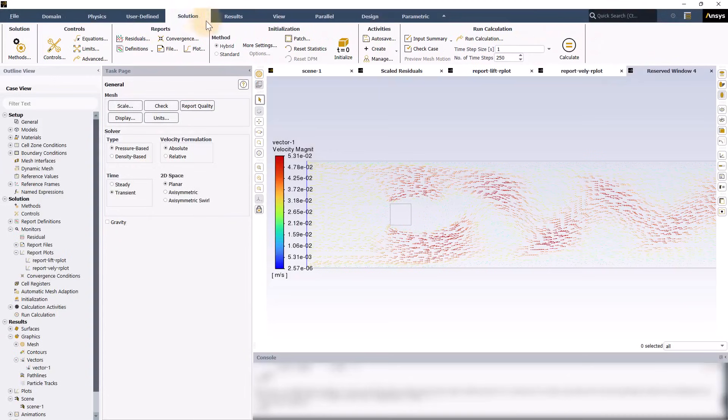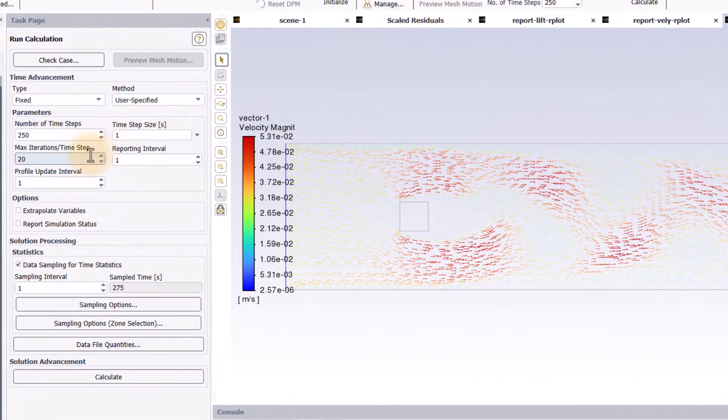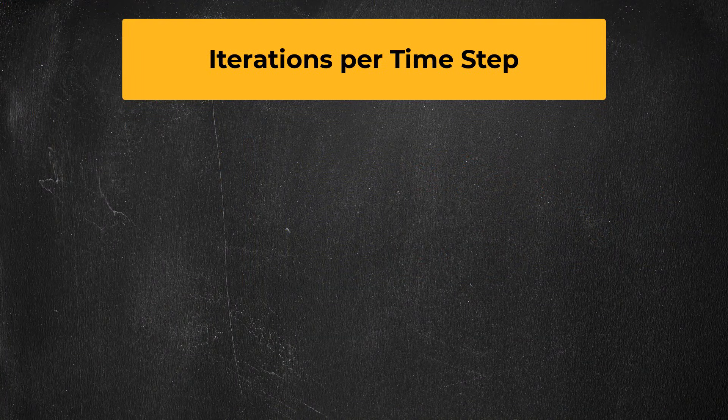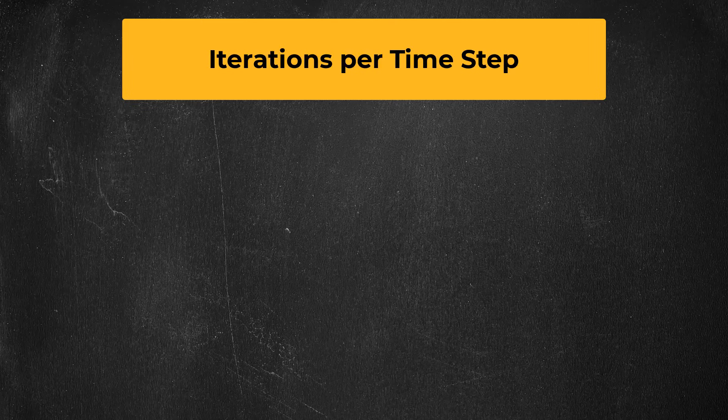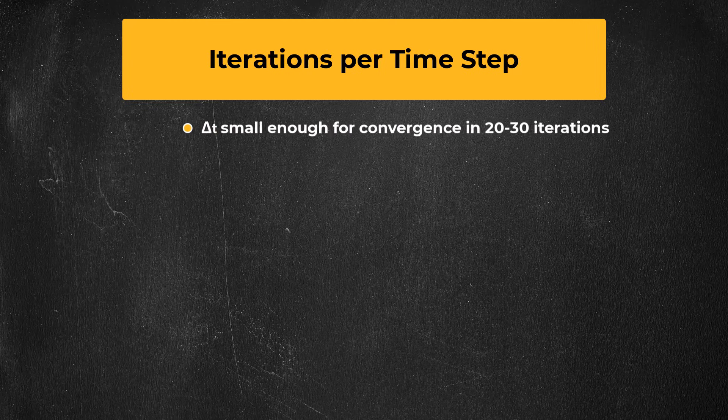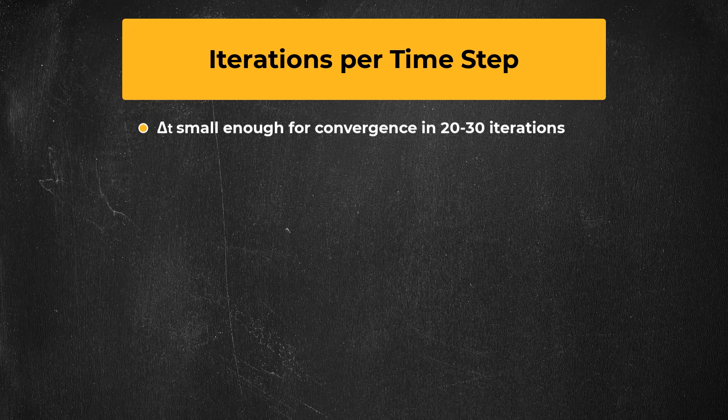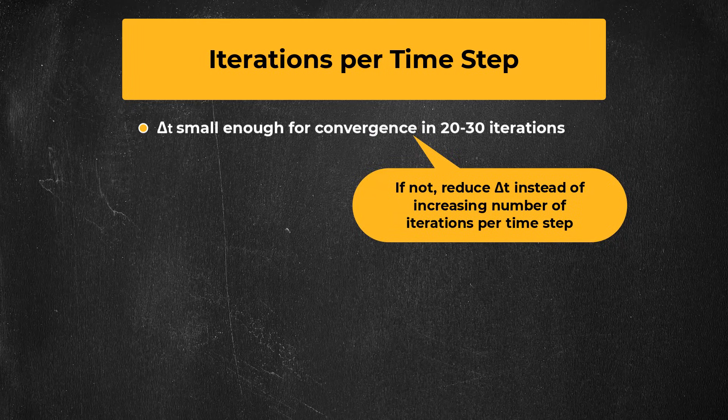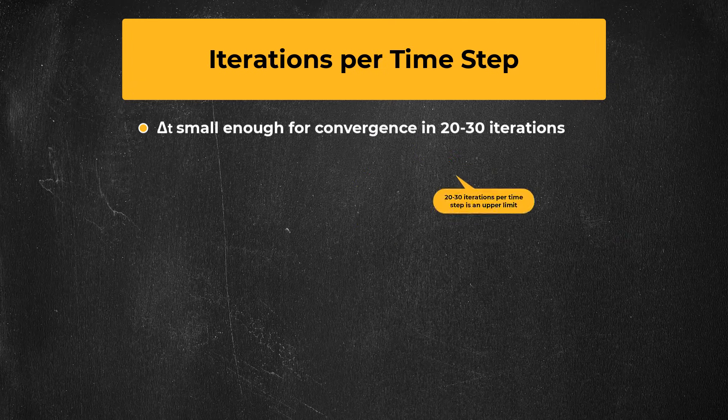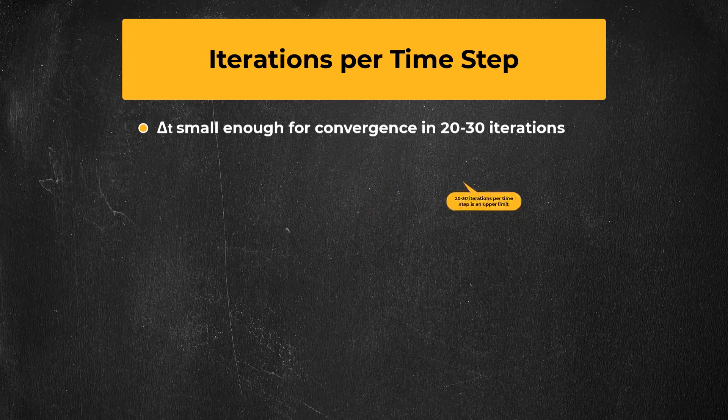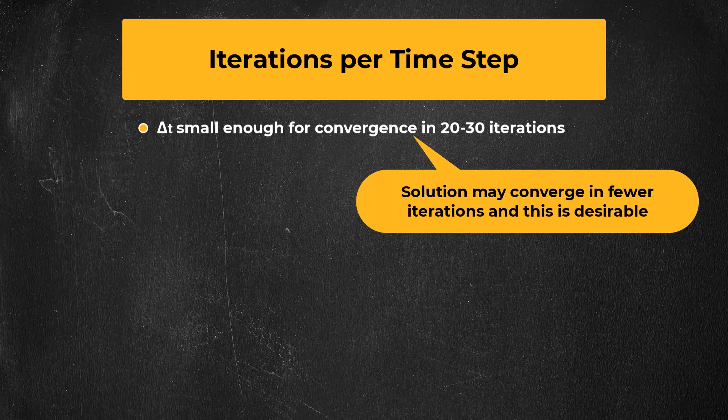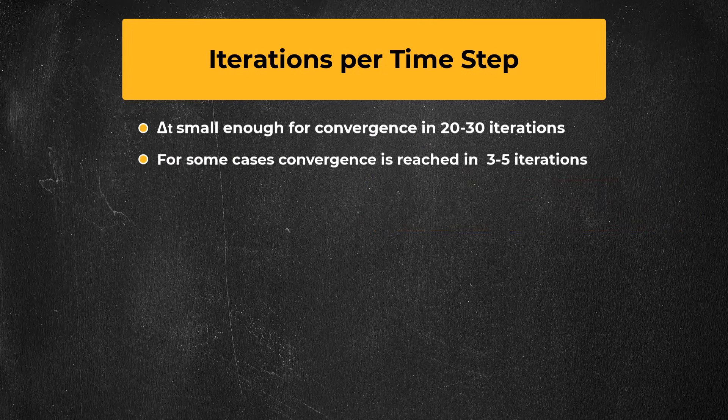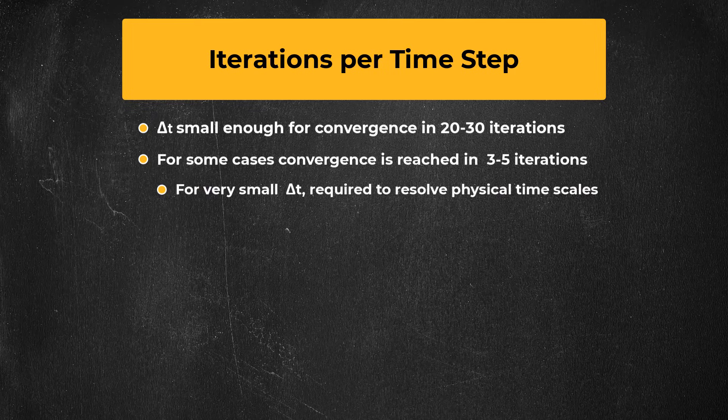You also have to enter the number of iterations per time step. This is a maximum number. For instance, if you enter 20, and the residuals converge before 20, it will move to the next time step as soon as they converge. The answer to the questions of how many iterations per time step can be different for different kinds of problems, but there are some general guidelines you can use as a starting point. First of all, in most cases, in order to complete the whole transient analysis as efficiently as possible, the time step size should be small enough so that the residuals converge within no more than 20 to 30 iterations. If it is taking more than that, then most of the time it's better to reduce the time step size than it is to increase the number of iterations per time step. The numbers 20 to 30 represent an upper limit, not necessarily a target value. There can be cases where the solution will converge in far fewer iterations, and that is perfectly okay. It's possible to have cases where as few as three to five iterations are needed, especially in applications where a small time step is required to resolve physical time scales.